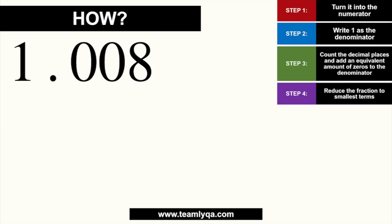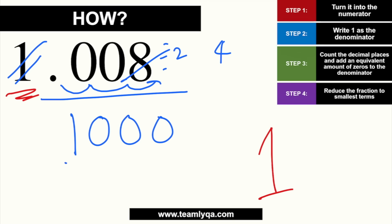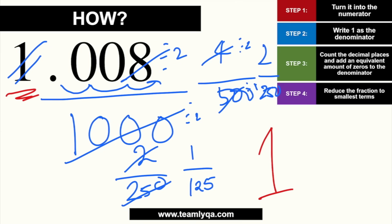Alright, let's see how you did. Using the same steps: set aside the whole number 1 right away — that goes in your final answer. Then take only the decimal part, 0.008. Put 8 as the numerator over 1. Count the decimal places: 1, 2, 3 — so add three zeros: 8 over 1,000. Divide by 2: 4 over 500. Divide by 2 again: 2 over 250. Divide by 2 once more: 1 over 125. So the answer is 1 and 1/125.